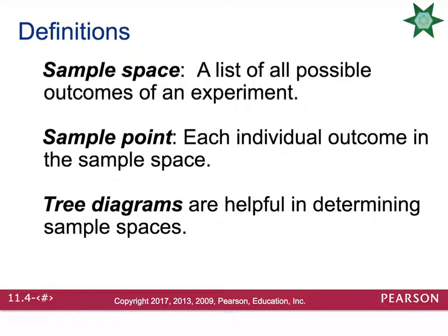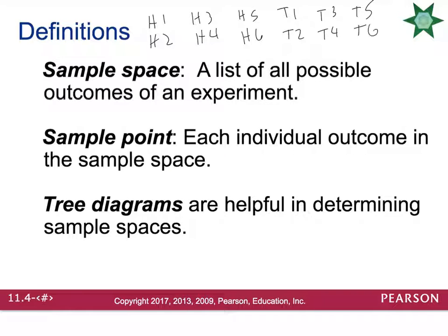A sample space is a list of all the possible outcomes of an experiment. For the coin and die example, there are 12 items in the sample space: head 1, head 2, head 3, head 4, head 5, head 6, tail 1, tail 2, tail 3, tail 4, tail 5, tail 6. That's the sample space — all the possible outcomes of the experiment.